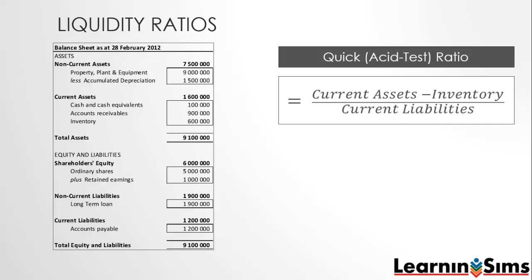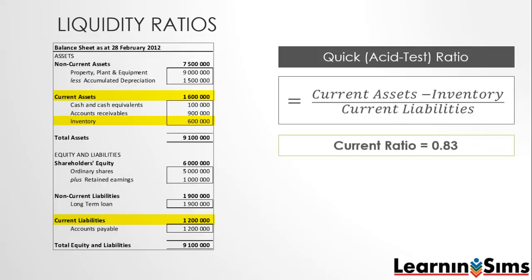In our example we would deduct the inventory of 600,000 from the current assets of 1.6 million. That gives us an answer of 1 million, which we divide by the 1.2 million of current liabilities. This means the quick ratio is equal to 0.83. This is a good measure of liquidity risk, as we can clearly see that if we do not sell our inventory or sell it on credit, we will only have 83 cents in current assets to cover every dollar of current liabilities.